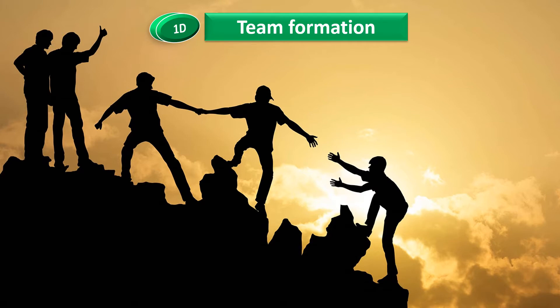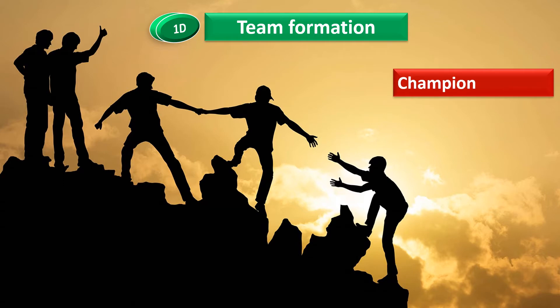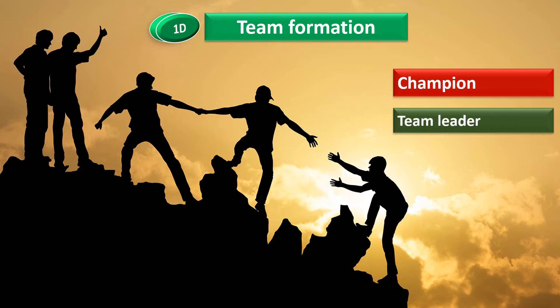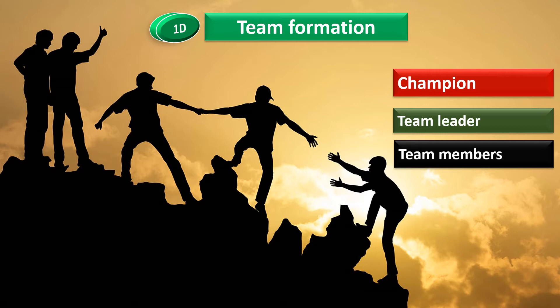1D - Team Formation: Who should be in the 8D team and their responsibilities. First is the Champion — the Champion is an executive sponsor, not a working team member; he or she is ultimately responsible for fixing the problem. Then the Team Leader, who coordinates the entire 8D project. Then Team Members, who must complete their responsibilities and actions and report back to the team leader on their progress.